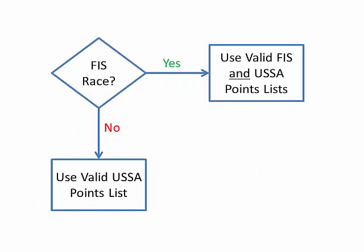The first question you need to ask yourself is whether or not you are hosting a FIS competition. If it is, you'll need to use both the current FIS and USSA points lists. That's because a USSA-sanctioned FIS race is scored by both the USSA and FIS. In order to submit results, each competitor must be identified by both a USSA number and a FIS number.